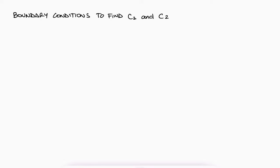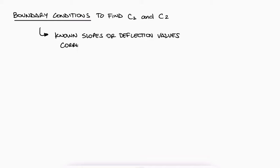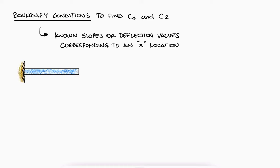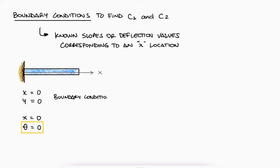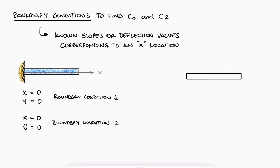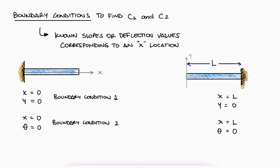We call the integration constant from theta(x) to the deflection y(x) as C2. To find the values of C1 and C2, we use what we call boundary conditions. These are known values for either slopes or deflections along the beam depending on the type of supports we have. For example, a cantilever beam attached to the left wall means the beam at x equal to zero cannot deflect — y equals zero — and it cannot rotate either since it's not a hinge, meaning the slope is also zero. If the wall is on the right instead, the same y and theta conditions apply but at x equal to the length of the beam, since we always use the left side as x equal to zero.